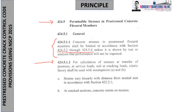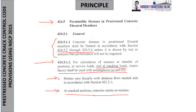At cracking loads, elastic theory shall be used with the assumption that stresses vary linearly because it is under service state. Under letter b, at crack sections, concrete resists no tension — meaning concrete is already at its failure point in tension. That is why there is installation of prestressing tendons, which may be wire, tendon, unbonded or bonded, including partial and full prestressing.